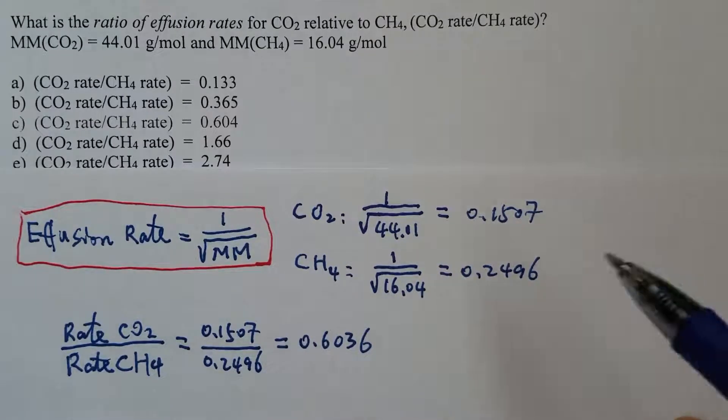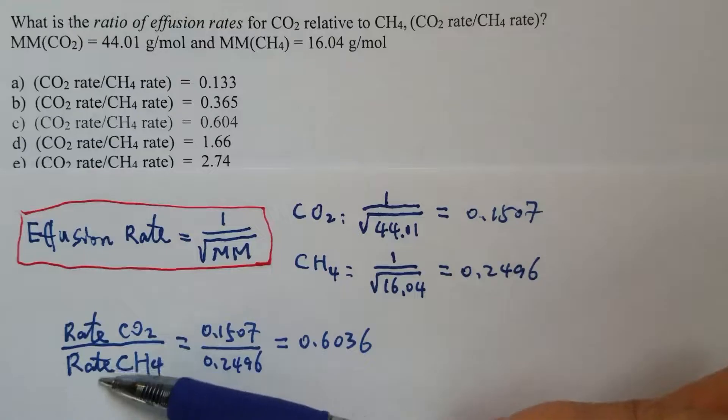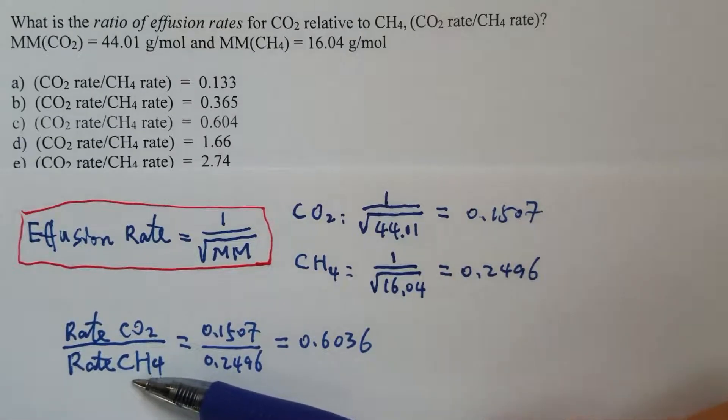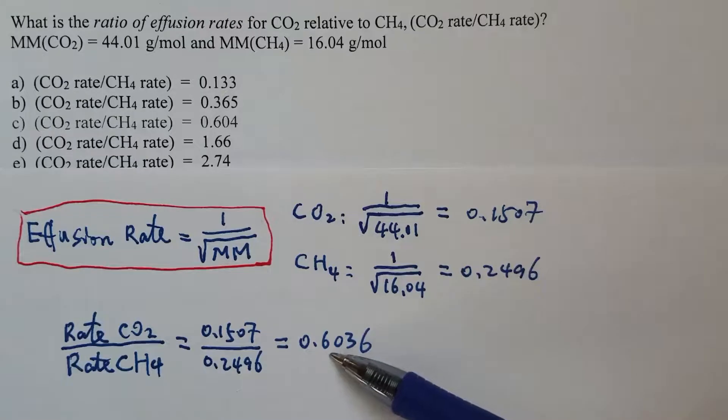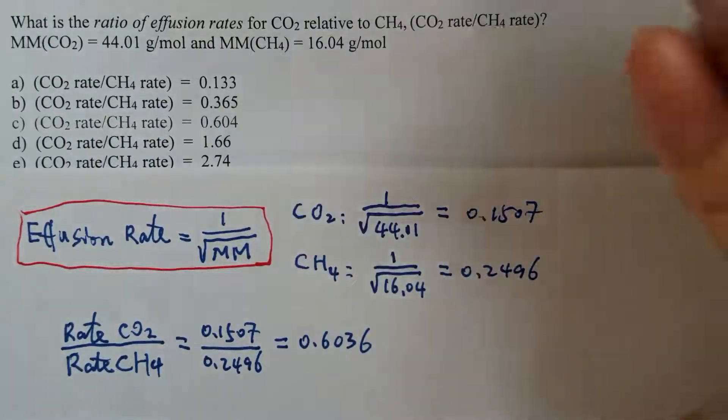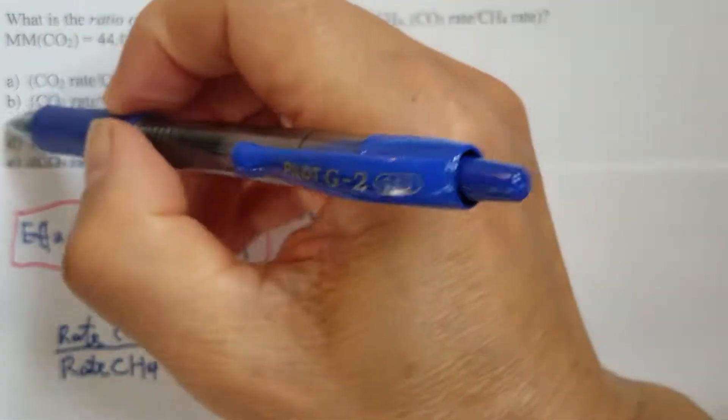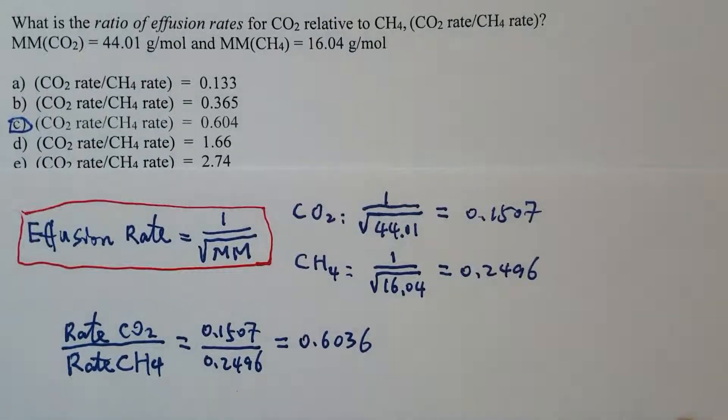So at last, the effusion rate of CO2 over the effusion rate of CH4 is 0.6036. The closest one in those choices here is C, so therefore C should be the correct answer for this question.